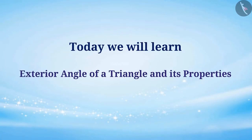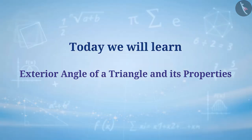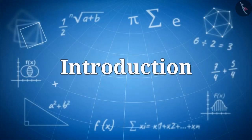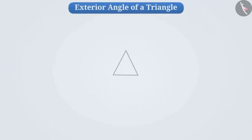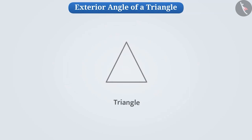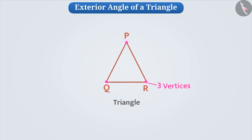Today we will learn about the exterior angle of a triangle and its properties. A triangle is a polygon with three sides, such as triangle PQR. It has three vertices, just like triangle PQR has vertices P, Q, and R.